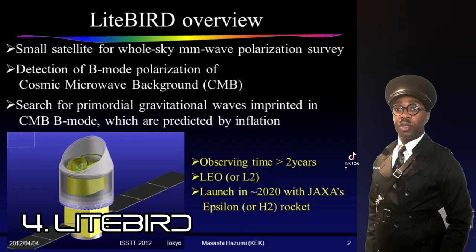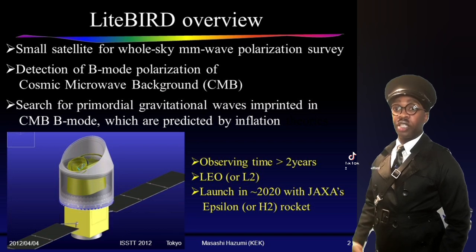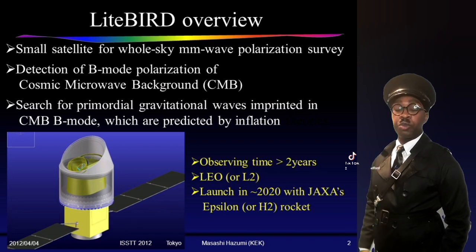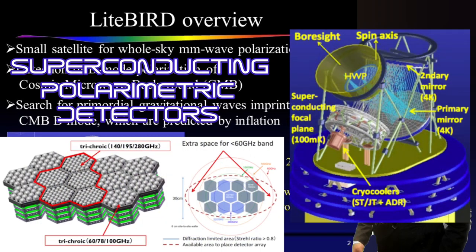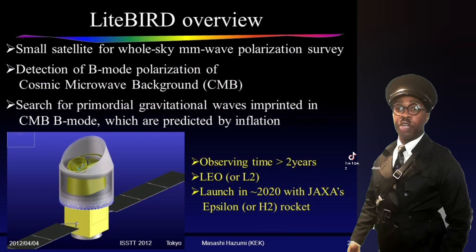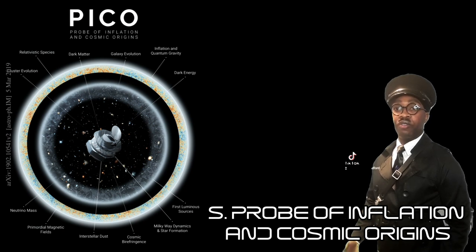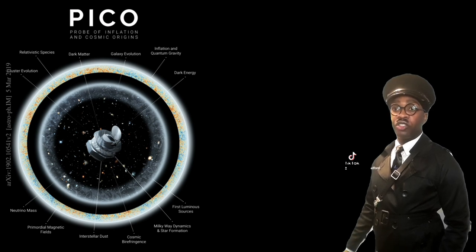The Japanese space agency's LiteBIRD project is one of the most recent space-based projects, and will use superconducting polarimetric detectors to detect primordial gravitational waves. PICO, also known as the Probe of Inflation and Cosmic Origins, is a proposed imaging polarimeter that will survey the sky for five years in 21 bands of frequency spanning from 21 to 799 gigahertz, and could be sensitive to the information contained in the cosmic microwave background radiation.